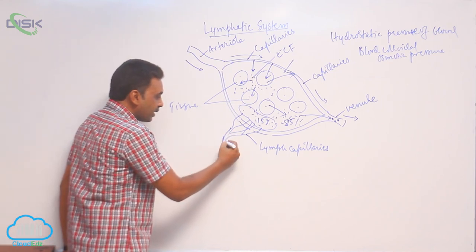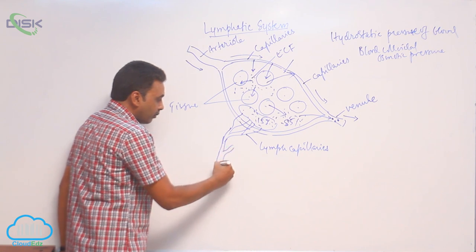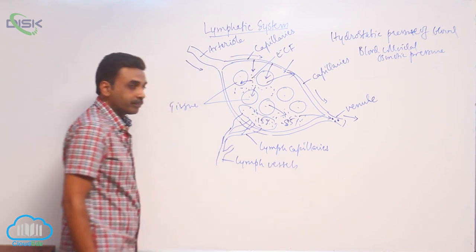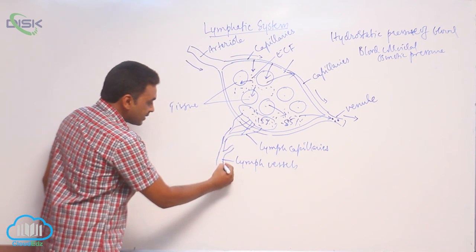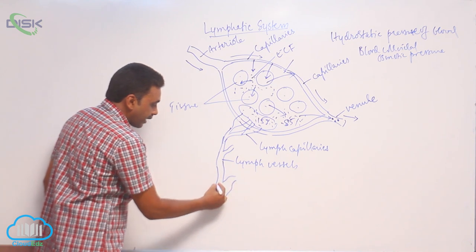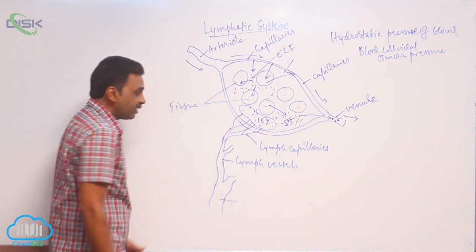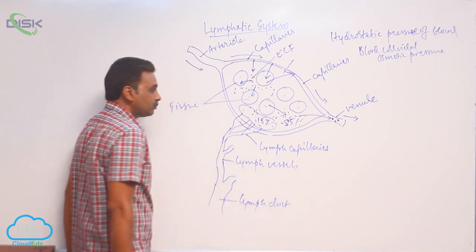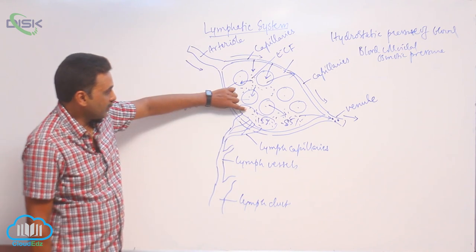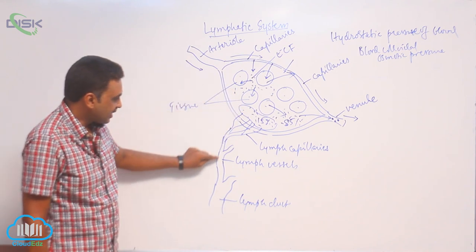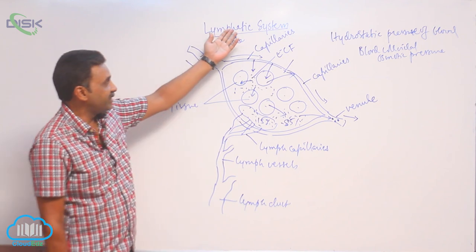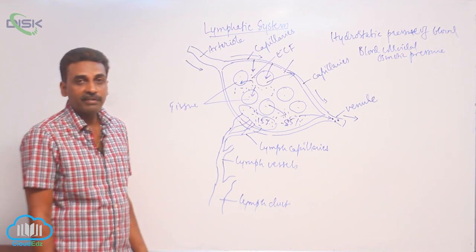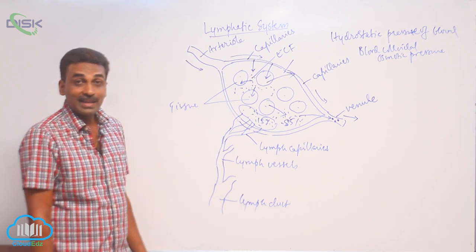Gradually these lymph capillaries combine together and form lymph vessels. The lymph vessels gradually combine with each other and finally result in the formation of lymph ducts. So lymph capillaries, lymph vessels, and lymph ducts are all part of the lymphatic system. The lymph duct will finally go back and enter into the subclavian vein.